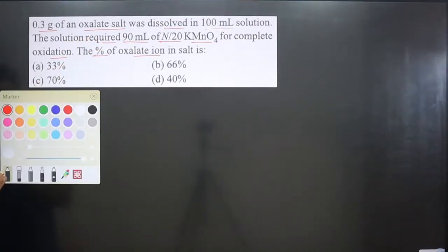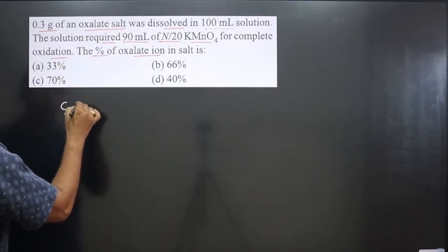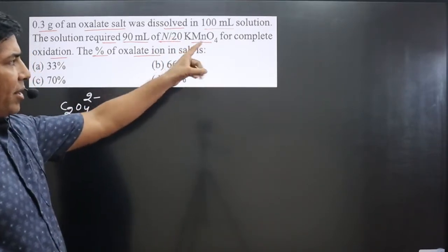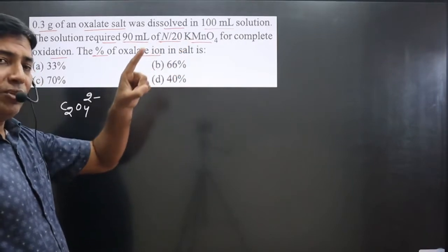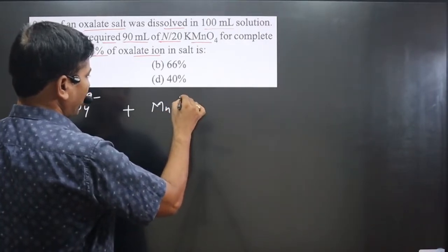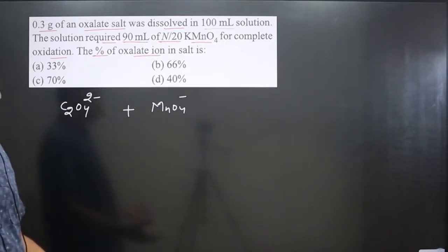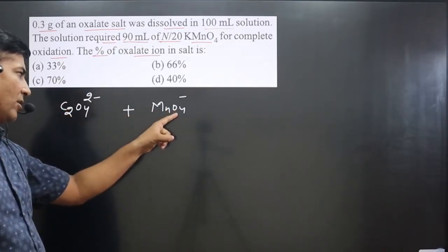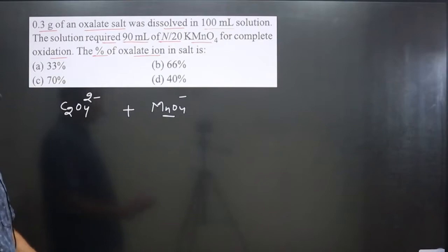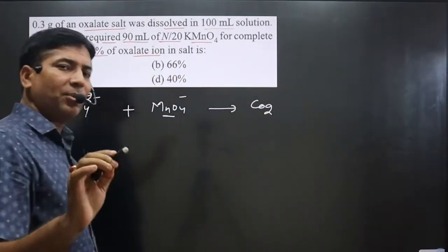From the oxalate salt we can get oxalate ion. Removing the spectator metal ion, we have oxalate ion C₂O₄²⁻. From KMnO₄, removing spectator K⁺, we get permanganate ion MnO₄⁻. This is the actual reaction taking place. Now we can complete the reaction.